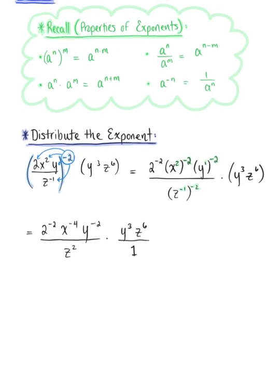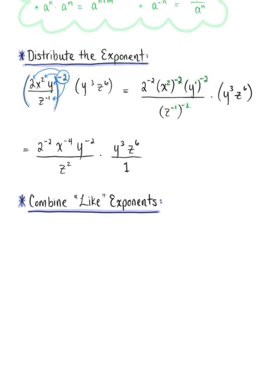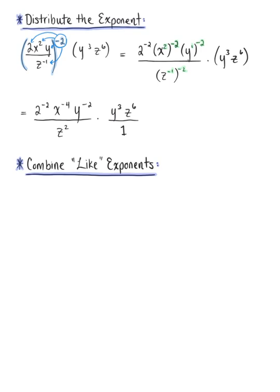So now we're ready to combine like exponents using the product rule and the quotient rule of exponents. We only have one constant, two to the negative two. We only have one x, that's x to the negative four. But we have two y's: y to the negative two times y cubed, so we can rewrite this as y to the negative two plus three. We also have two z terms: z to the sixth divided by z squared, so we can rewrite this as z to the sixth minus two.